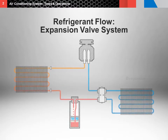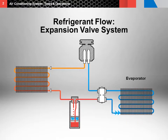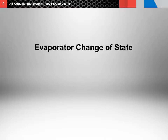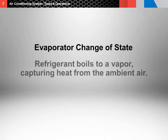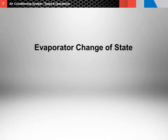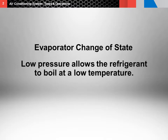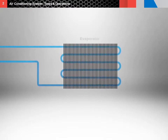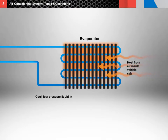Next, the refrigerant enters the evaporator. As it flows through the evaporator, it changes from a cool, low pressure liquid to a cool, low pressure vapor — this is called change of state. In the evaporator, the refrigerant boils to a vapor, capturing heat from the vehicle cab ambient air. The reason the refrigerant boils in the evaporator is because it is under low pressure. The low pressure allows the refrigerant to boil at a low temperature. Change of state in the evaporator is very important because during this process, heat is collected from the air inside the vehicle cab.